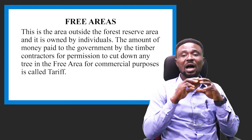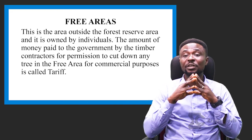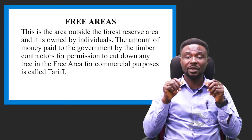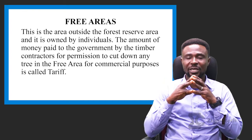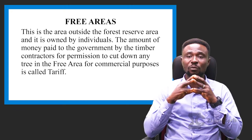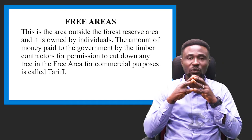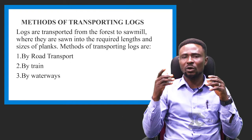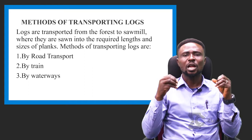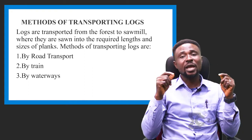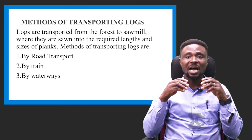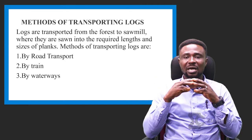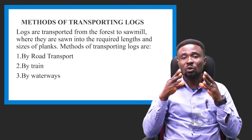Free area is the area outside the forest reserve and is owned by individuals. The amount of money paid to the government by timber contractors for permission to cut down trees in the free area for commercial purposes is called tariff. To summarize: in a government forest reserve area, the money paid is called OTV (out-turned volume), while in the free area it is called tariff. Logs are transported from the forest to the sawmill, where they are sawn into required lengths and sizes for planks, especially for commercial purposes. Methods of transporting logs include road transport, by train, and by river or waterways — waterway transport being common in Rivers State.